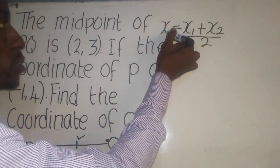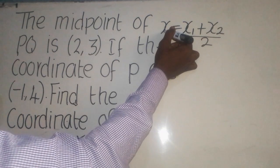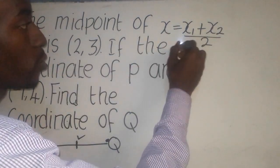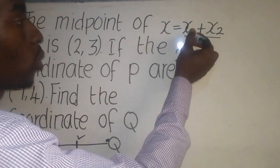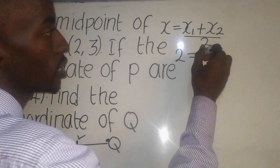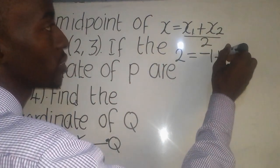This X simply means the midpoint. What is the midpoint here for the value of X? It is 2. So here you put a 2 equal to. What is the value for X1? X1 is negative 1. We say negative 1 plus what is it?